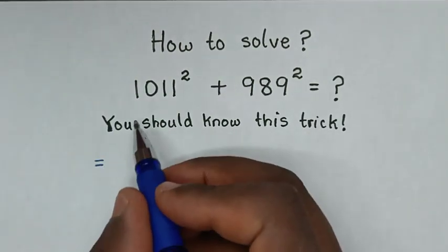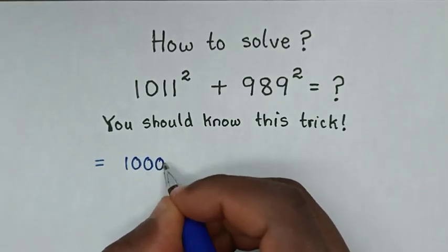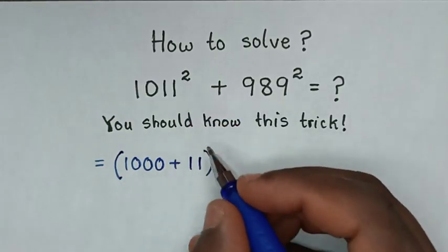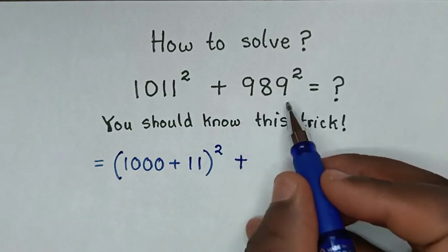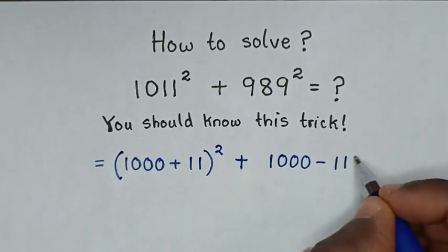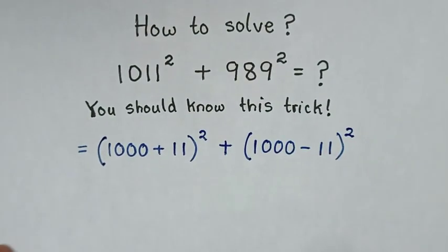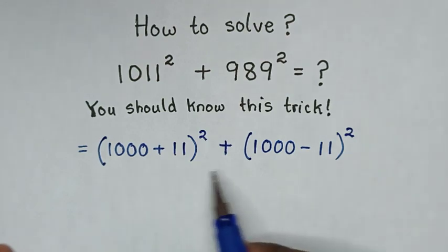From this math problem it will be equal to, from 1011 is same as 1000 plus 11 then bracket square, then plus this 989 is same as 1000 minus 11 then bracket square.